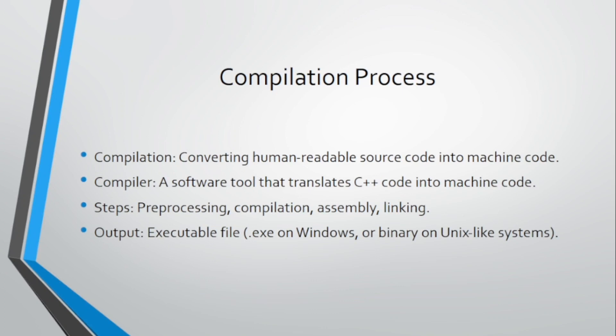What is the compilation process? Compilation means converting human-readable source code into machine code. A software tool that translates C++ code into machine code is called a compiler. It usually consists of the following steps: preprocessing, compilation, assembly, and linking. The output file after running your code in a compiler will have an extension like .exe on Windows.